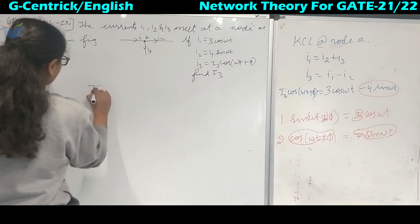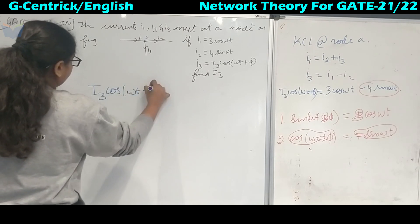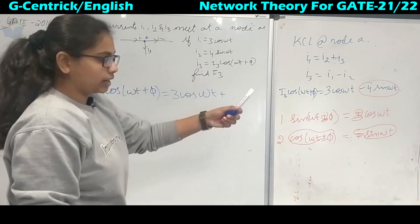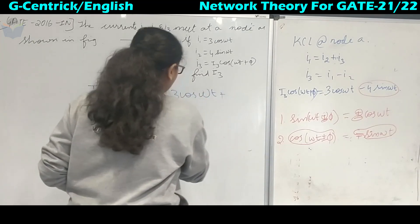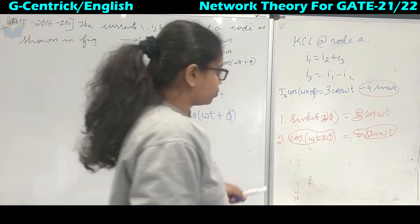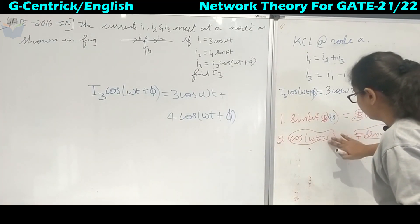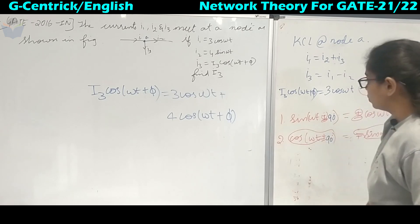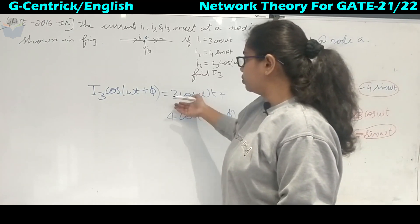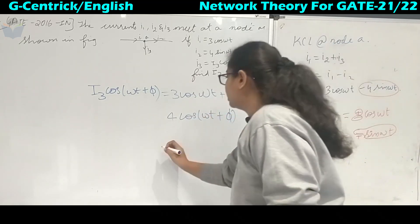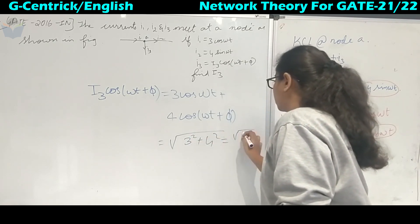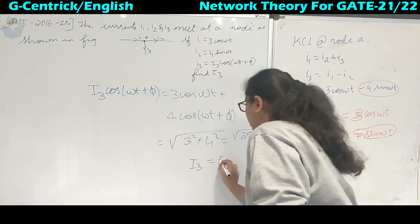So I3·cos(ωt + φ) = 3·cos(ωt) + 4·cos(ωt + 90°). The magnitude does not change, so we keep it as 4 and convert the sin to cos with 90 degrees. Since they haven't asked about the angle, we take φ as general. Taking the magnitude of both sides: |I3| = √(3² + 4²) = √25 = 5 amperes.